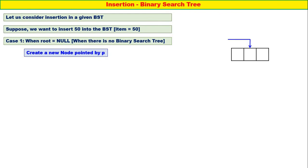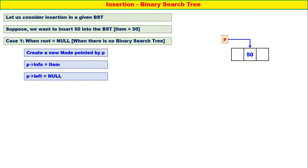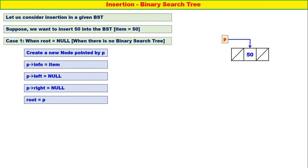Create a new node pointed by P. We have created a new node for the binary tree. P of info is equal to item — in this case P of info is equal to 50. P of left is equal to null. P of right is equal to null. Root is equal to P — let root contain the address of this node. And return root. There was no binary search tree node at all; now we have created a first node, root contains the address of that node, and we return it.